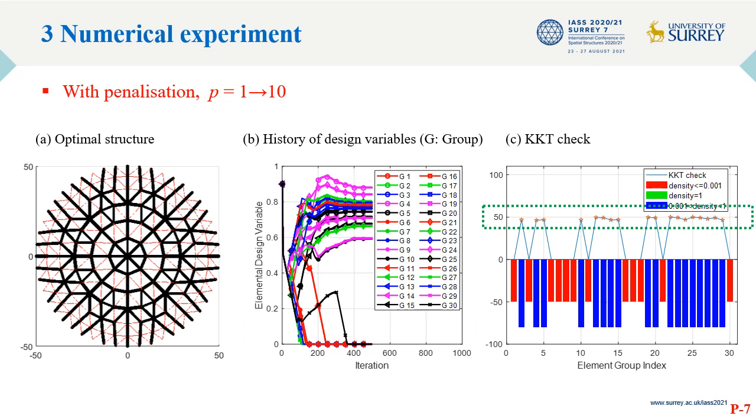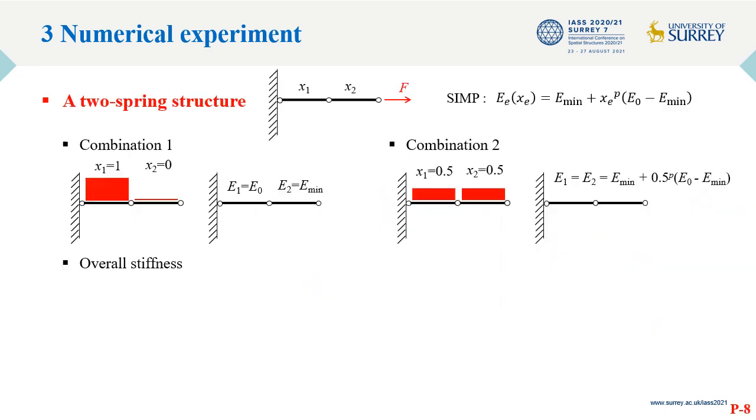From these two examples, we can see that with or without penalization, the algorithm fails to generate a binary design. The reasons behind this phenomenon is investigated via a simple theoretical example. A two-spring structure is considered. Two combinations of design variables are assigned to the elements.